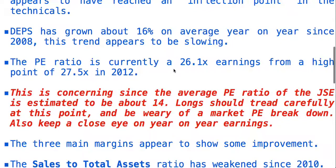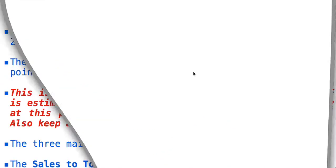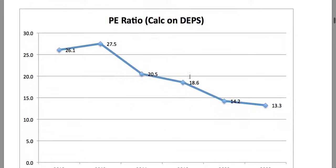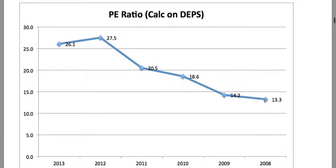The price to earnings ratio is currently at 26.1 times earnings, down from a high point of 27.5 times in 2012. The question now is whether we are going to see a multiple contraction. Multiple contractions are the real long killer — if we have declining EPS growth combined with a contraction of the market multiple, you should expect the price to actually lose much ground.